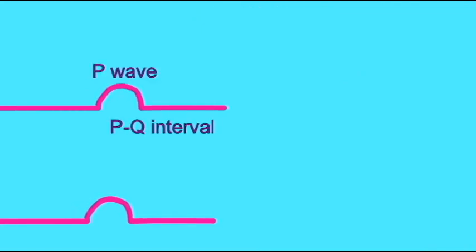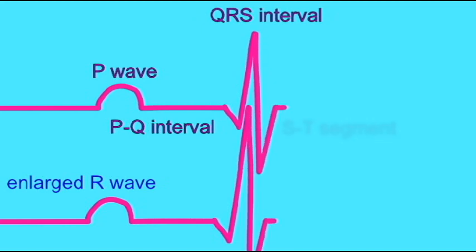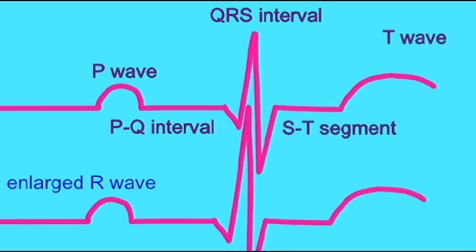An enlarged Q wave can indicate a heart attack or myocardial infarction. An enlarged R wave may indicate enlarged ventricles.